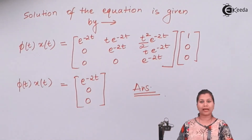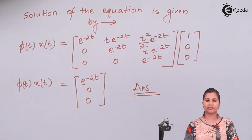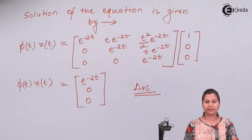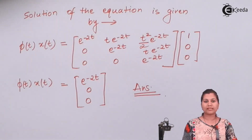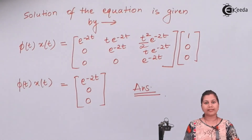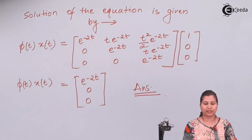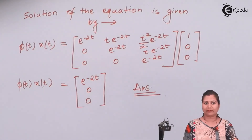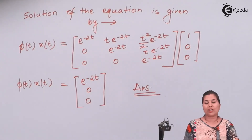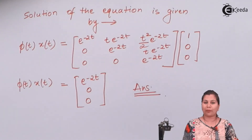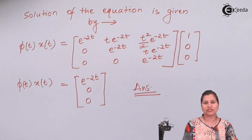We had to calculate three things: first, the resolvent matrix φ(s); second, the state transition matrix φ(t); and third, the solution of the equation. We have calculated all three. I hope this problem is clear to you and you can easily solve related problems. Thank you.